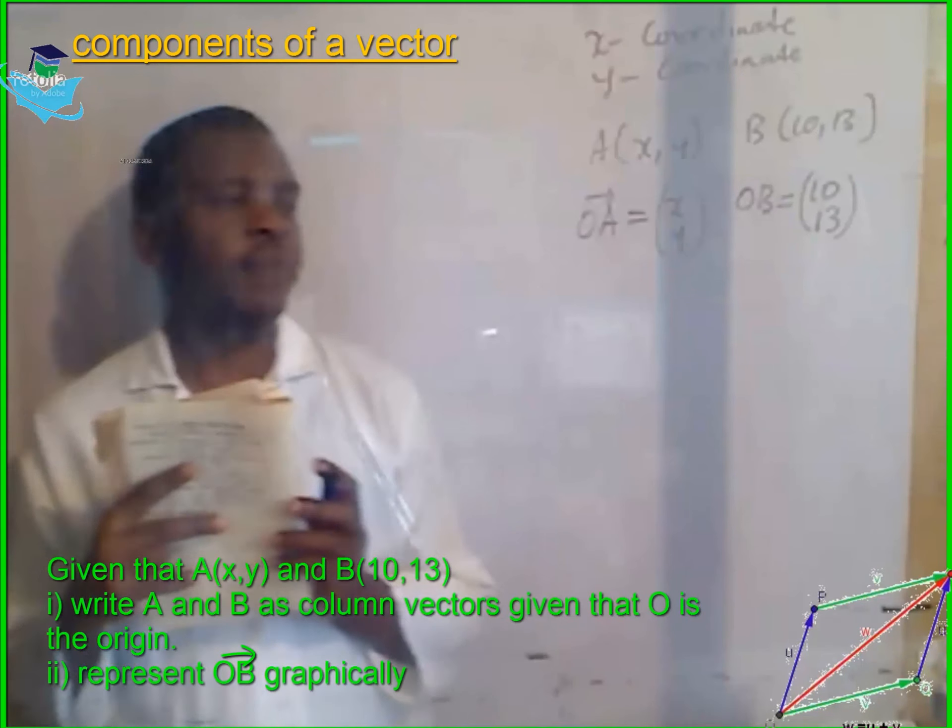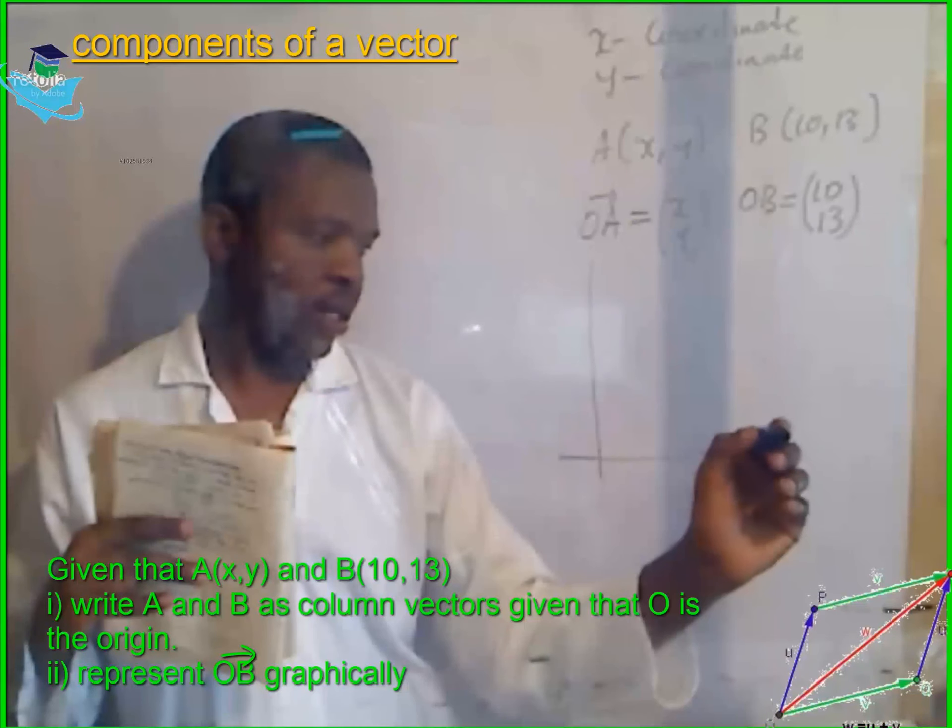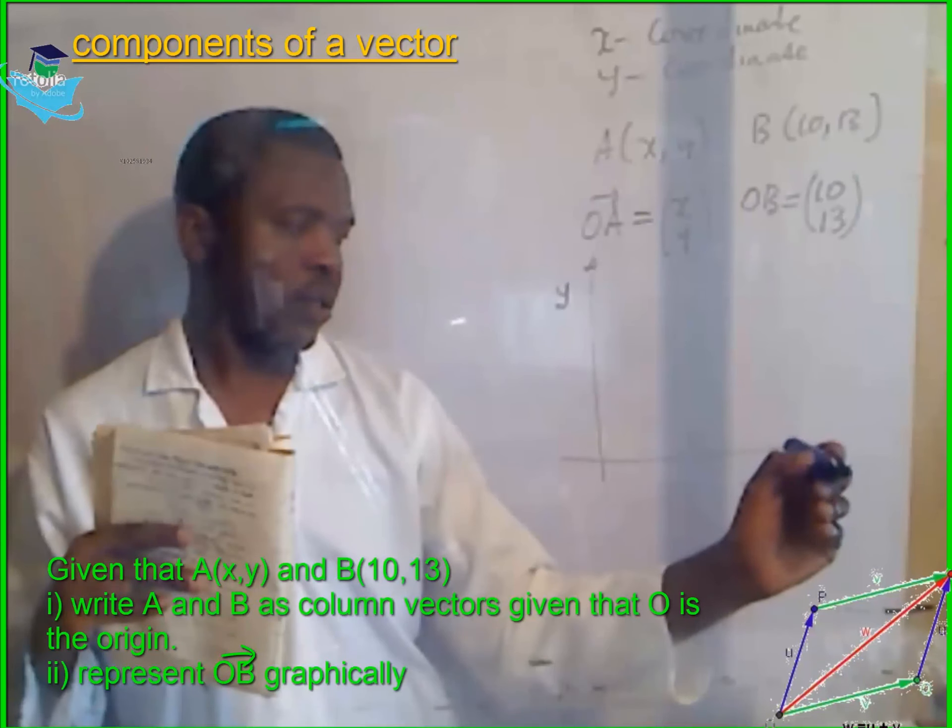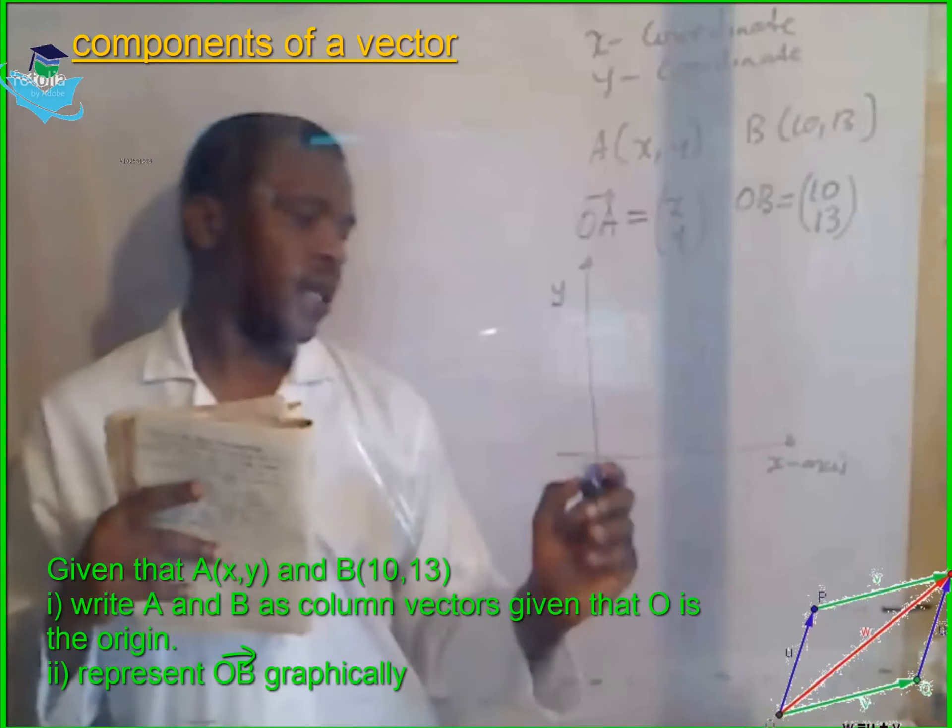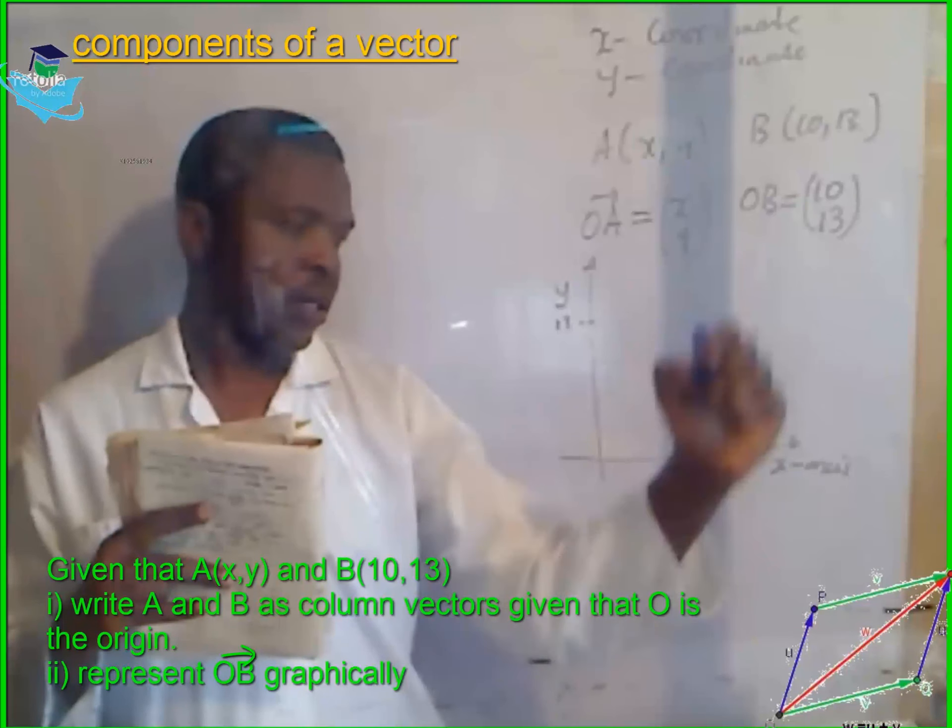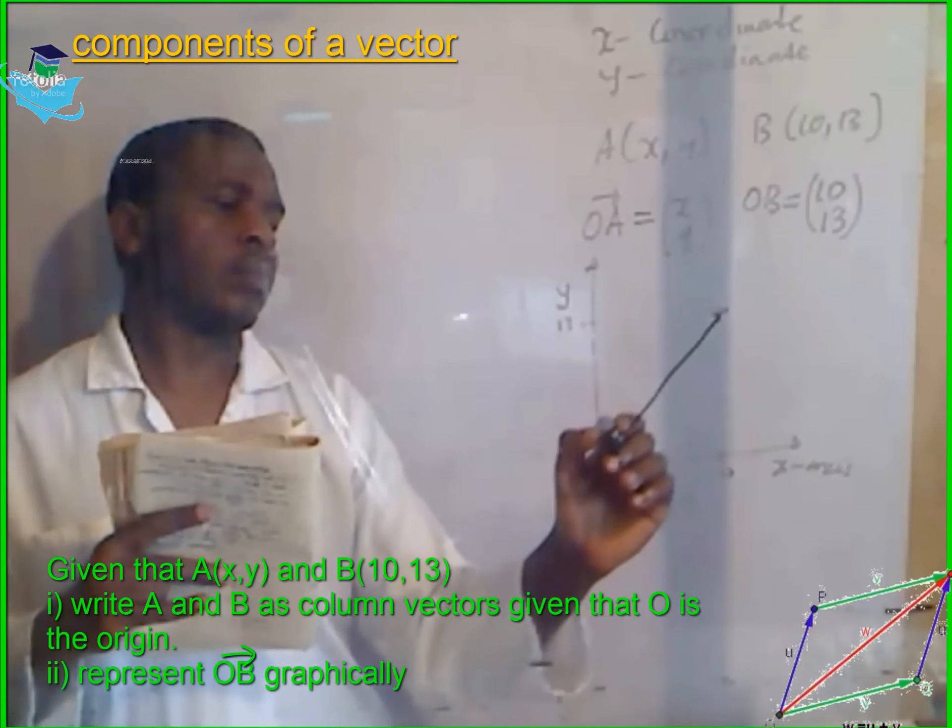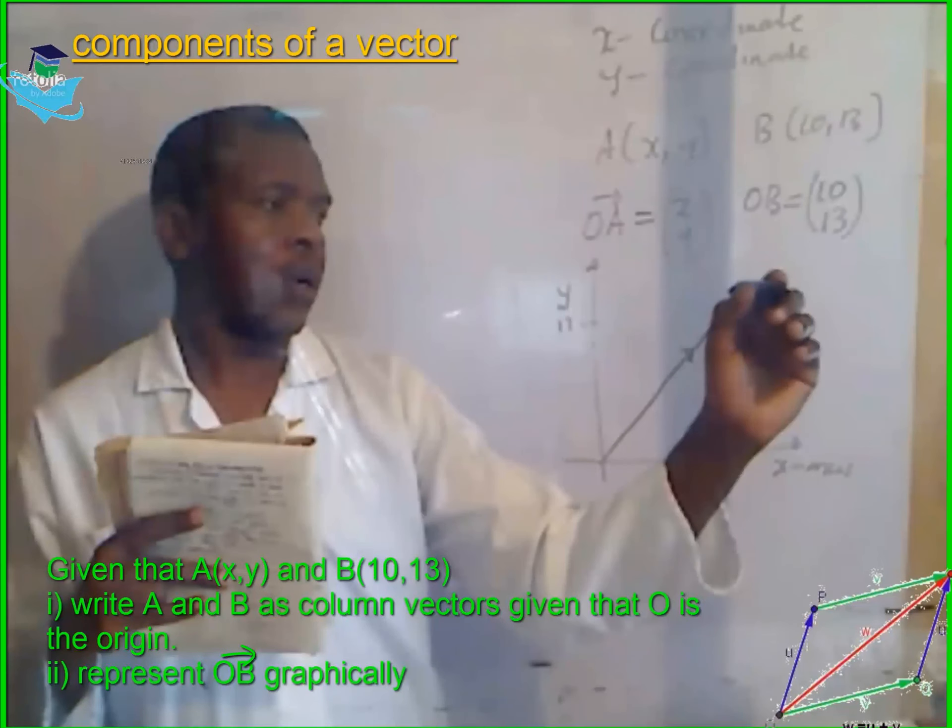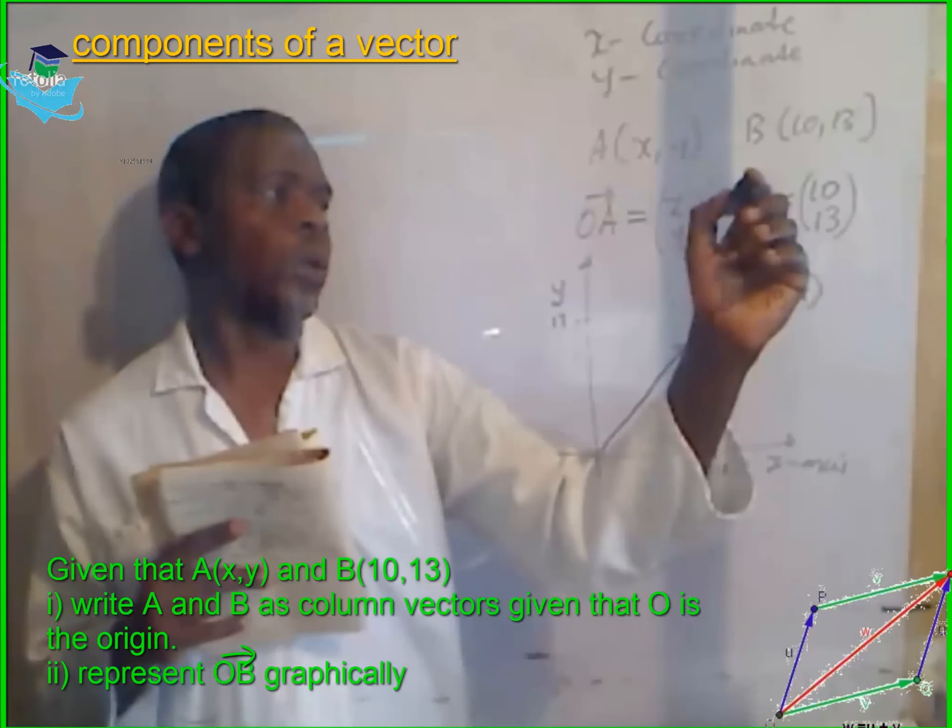Represent OB graphically. Let's sketch our planes here. The x and y axis. This is y, this is x axis. Let's just arbitrarily say this is the point 10. So, this is the graphical representation of the vector OB.